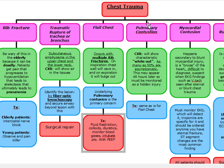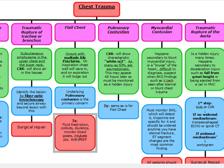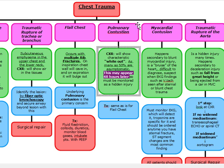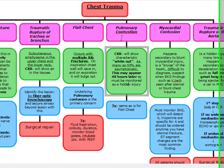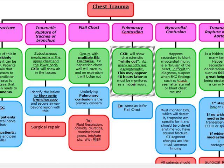Next topic is pulmonary contusion. This is easy to recognize on the test because if they show a chest x-ray, it's going to show a white-out appearance, happening secondary to chest trauma. It can appear up to 48 hours later, so we have to monitor these patients. A lot of times this is the hidden injury. The treatment is the same as for flail chest: fluid restriction, colloids rather than crystalloids, diuretics, and we're going to monitor and intubate these patients with PEEP.